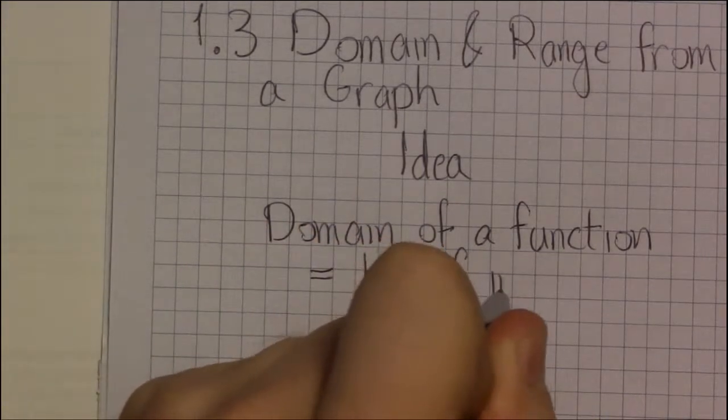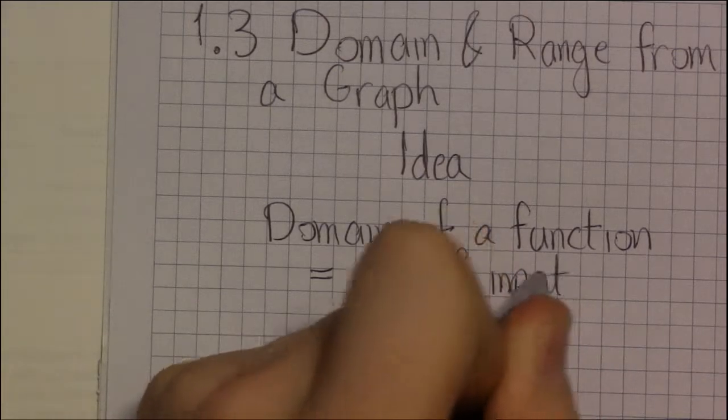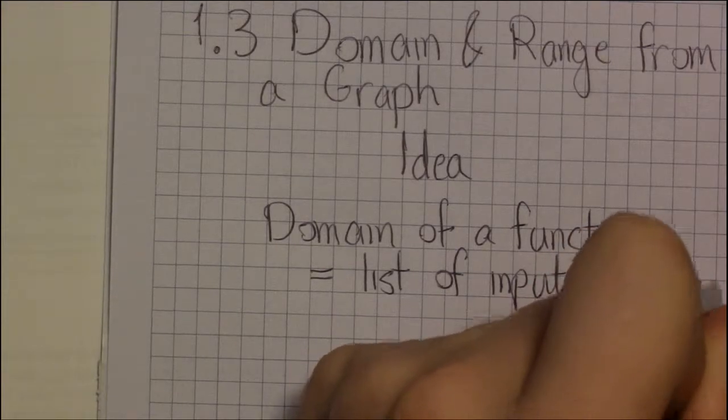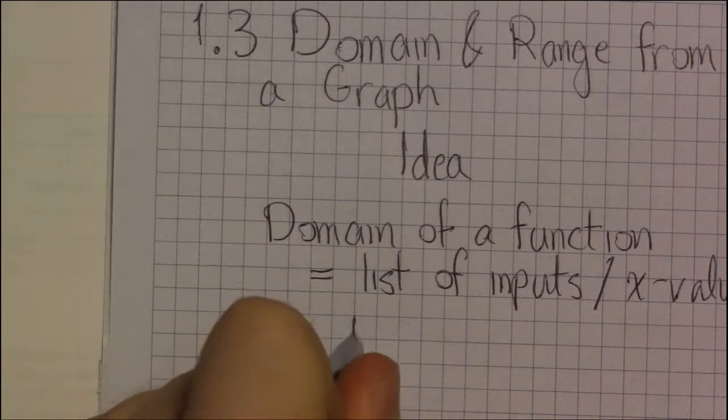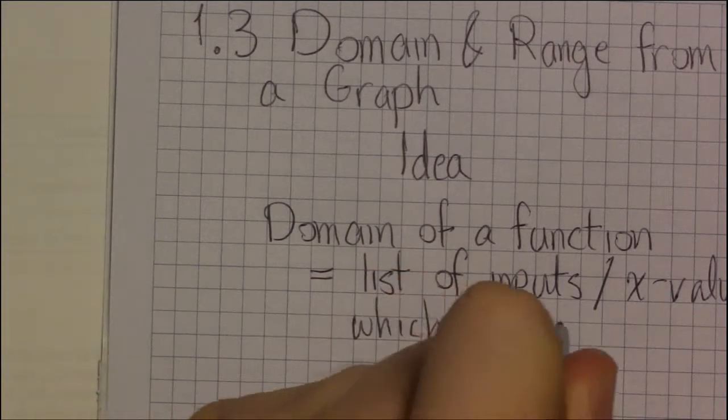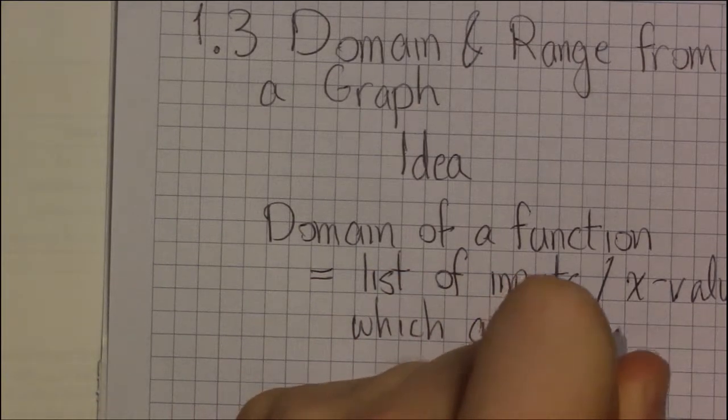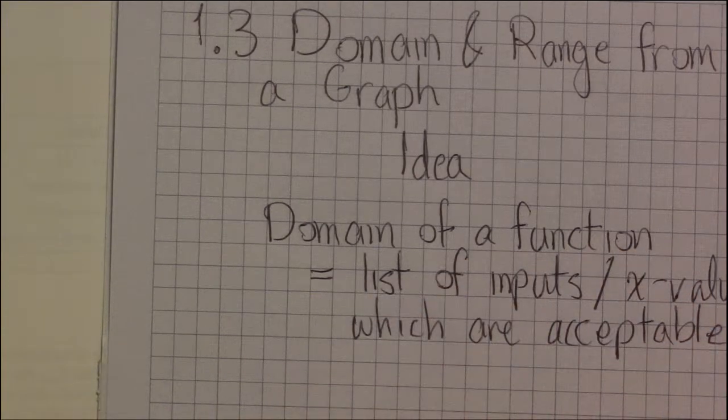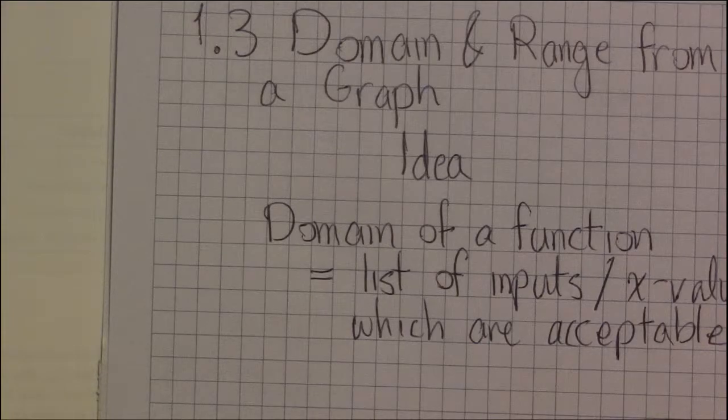So the list of inputs or x values which are acceptable. Don't force us to divide by zero or take square roots of negatives or do anything else we're not supposed to do.